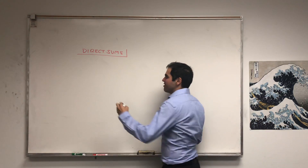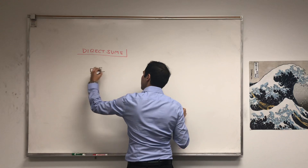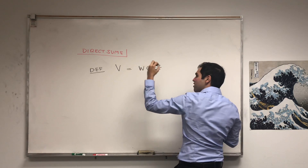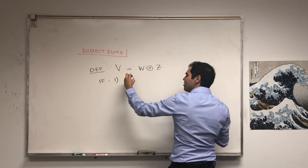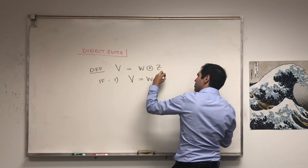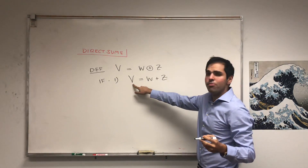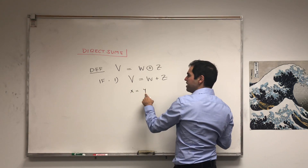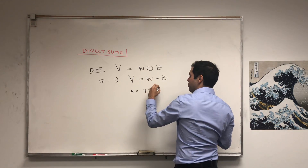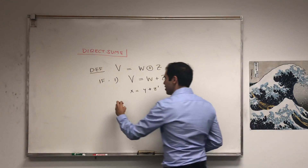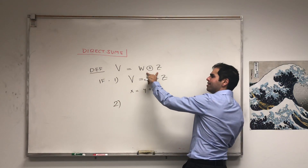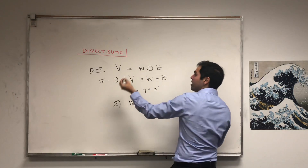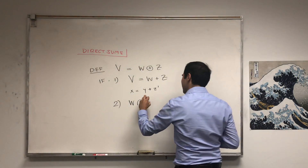So what is the definition of a direct sum? We say V is a direct sum of two subspaces, let's say W and Z, if the following two things hold: first of all, V is a sum of W plus Z, meaning any element in V can be written as a sum of an element in W and an element in Z. Moreover, those two subspaces need to have a zero intersection — they're disjoint except for the zero vector, since they are subspaces.